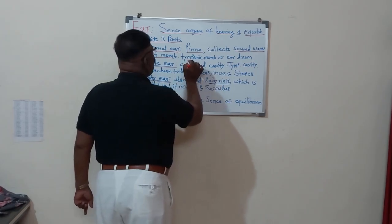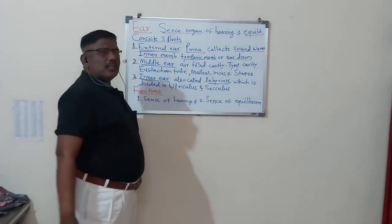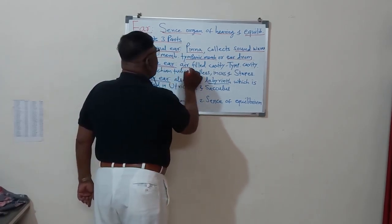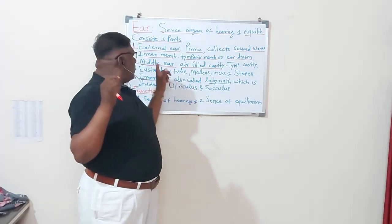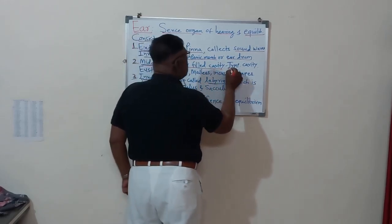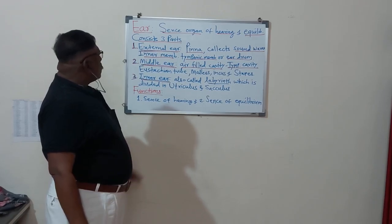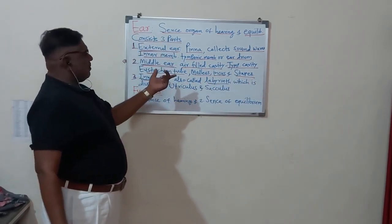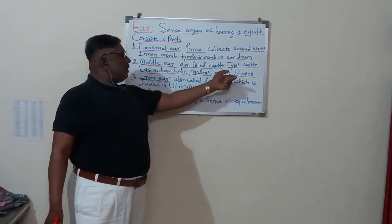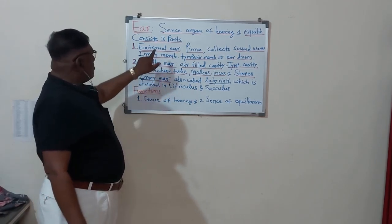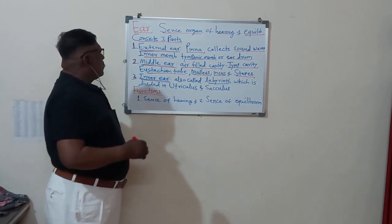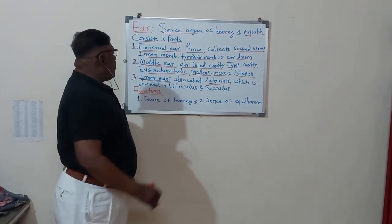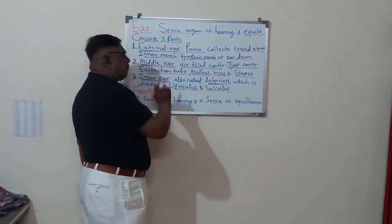Understanding, so it is essential, called as the external ear that is also called as the pinna. So it is the inner membrane that is called as the tympanic membrane or it is also called as the eardrum. Now after that the middle ear. Ear is filled cavity, that is the air-filled cavity, and that is also called as the tympanic cavity. So in the middle ear, there are the eustachian tube, malleus, incus, and stapes. In the inner ear, that is also called as the labyrinth, which is divided into utriculus and sacculus.